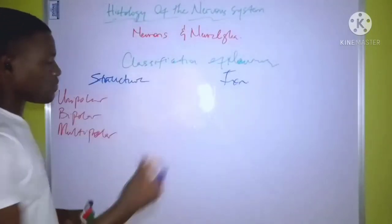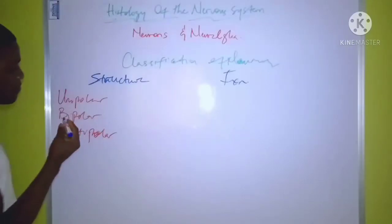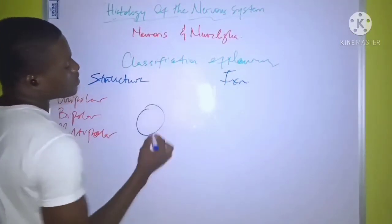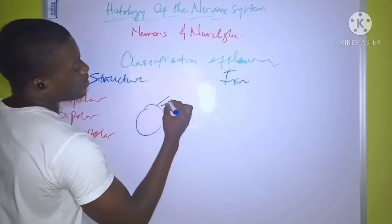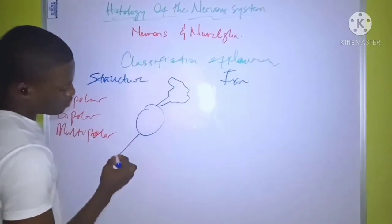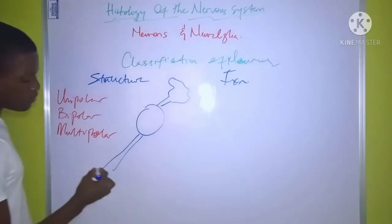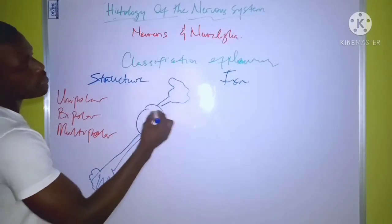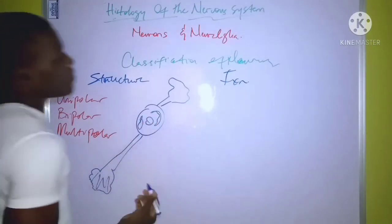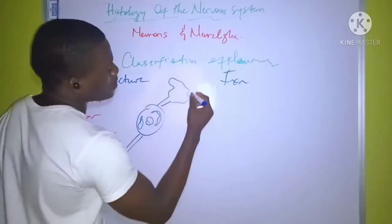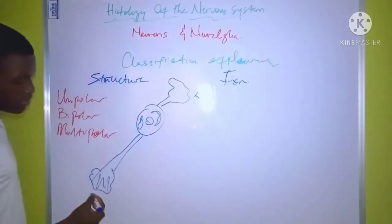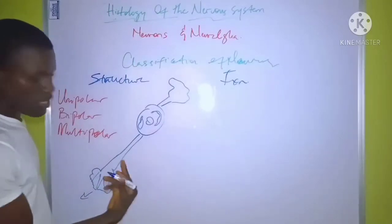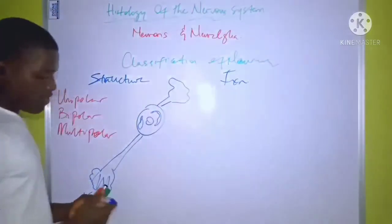The next is the bipolar neuron. As the name implies, 'bi' means two, and the bipolar neurons have two nerve fibers extending from the cell body. If this is the cell body, this is the dendrite — the shorter of the fibers which receives impulse — and then this is the axon, which sends out impulse from the neuron. So this is a bipolar neuron; it has two fibers.